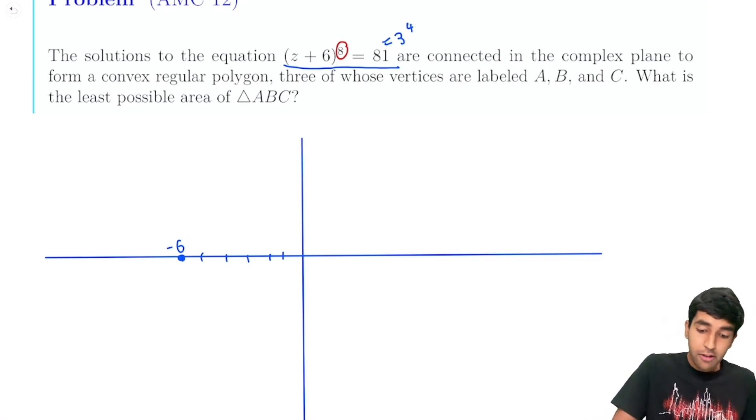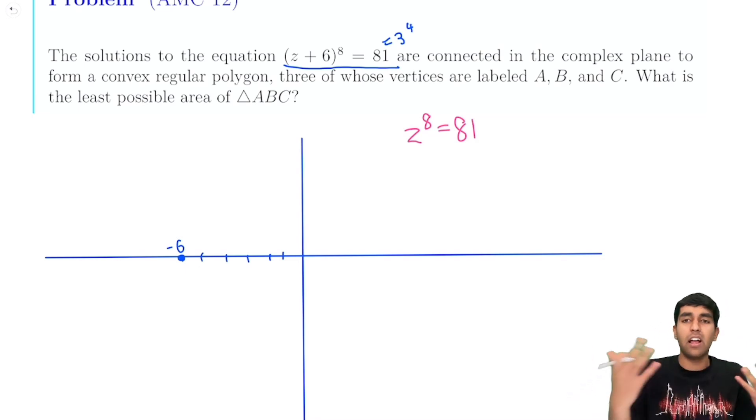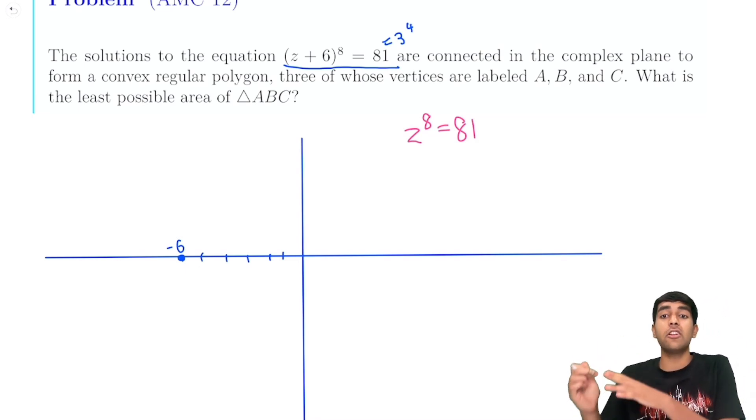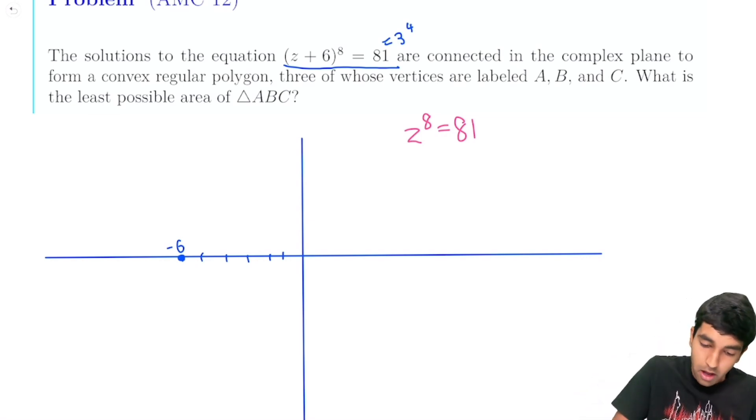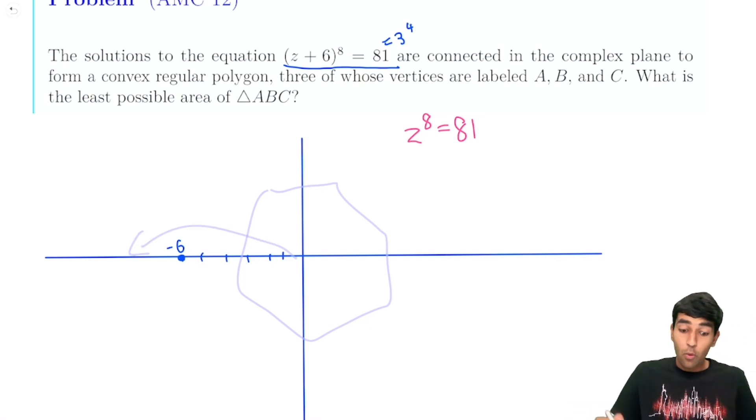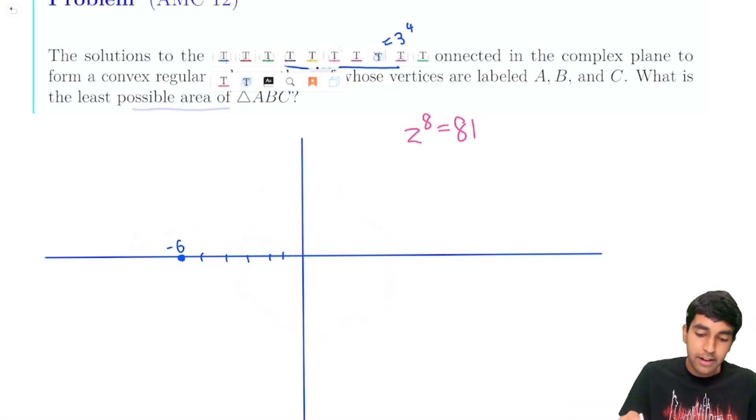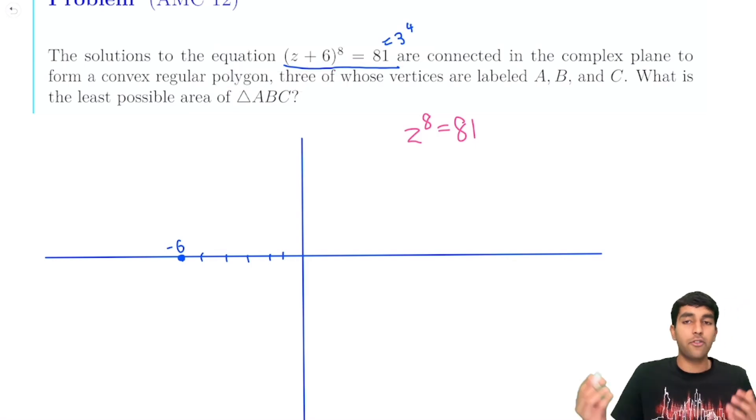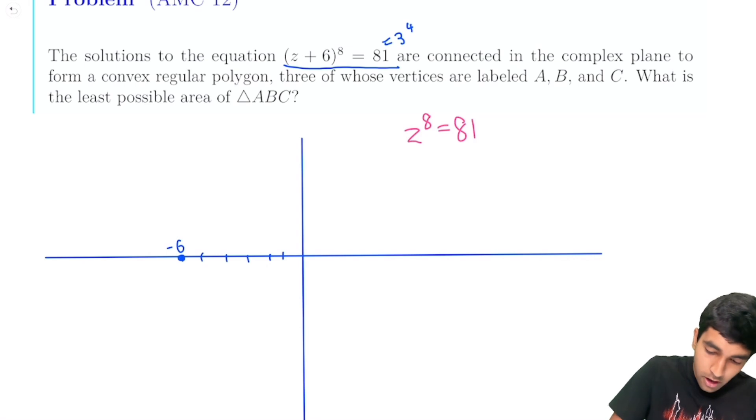So just for simplicity sake, dealing with negative 6 is very hard. This problem is functionally equivalent if we just make it z to the 8 equals 81. Because plus 6 is just shifting our diagram. It's not doing anything else, right? The transformation is shifting z 6 units right. So whatever polygon we would have here, we just imagine shifting that 6 units right. But we're only asked to find the least possible area, so the exact location of points is not important for our purposes. So now we get this nice simplification, we don't have to worry about negative 6 anymore.